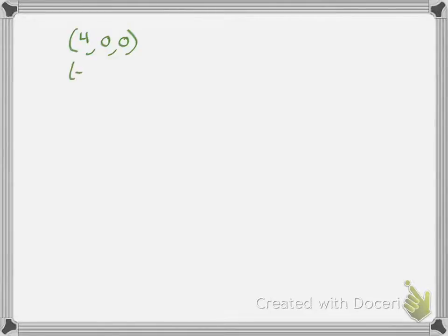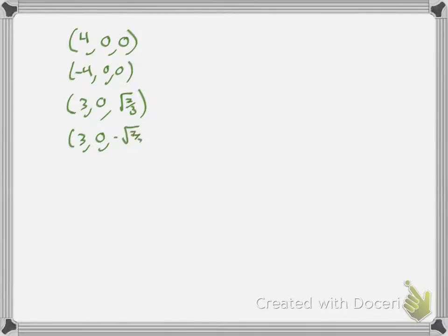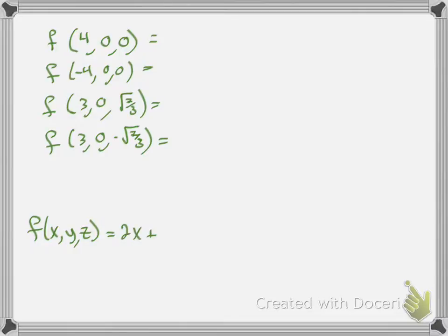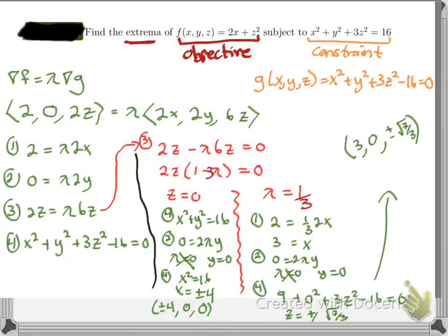Let's write out all the ordered pairs. From the z = 0 case: (4, 0, 0) and (−4, 0, 0). From the λ = 1/3 case: (3, 0, √(7/3)) and (3, 0, −√(7/3)). Just like in part one of Lagrange multipliers, we now plug these back into our objective f(x, y, z) = 2x + z².